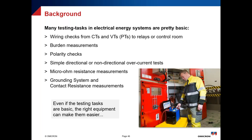Why do we need COMBANO? Many applications like wiring checks for CT loop and VT loop to the relay or control room, burden measurement, polarity checks, simple directional and non-directional overcurrent tests, frequency protection, micro-ohmmeter for contact resistance, grounding system measurement — all of these can be done by one device, which is COMBANO 100.